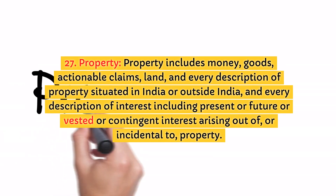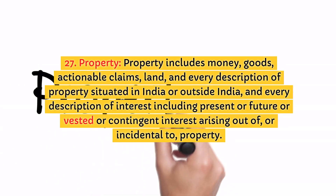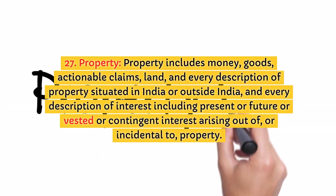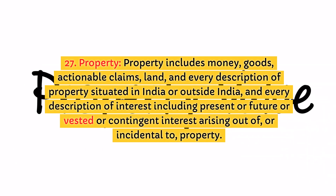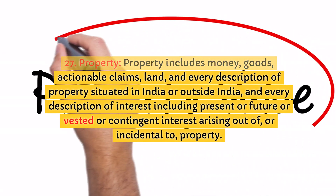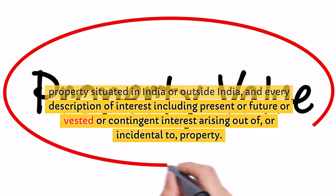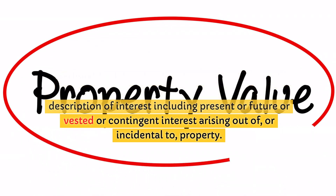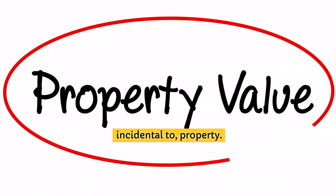27. Property. Property includes money, goods, actionable claims, land, and every description of property situated in India or outside India, and every description of interest including present or future or vested or contingent interest arising out of, or incidental to, property.